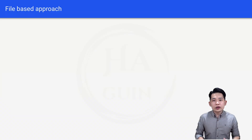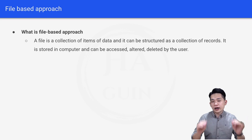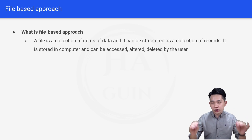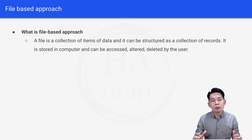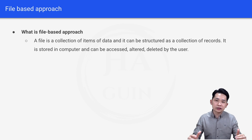First of all, what is a file-based approach? A file is a collection of items of data and it can be structured as a collection of records. It is stored in a computer and can be accessed, authored, and deleted by the user.